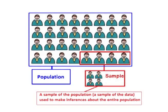A word about sample versus population. There are actually two ways of calculating the variance and standard deviation depending on whether you have a full set of data called a population, or just a sample of the data that is being used to make assumptions about the entire population. I will show both formulas.